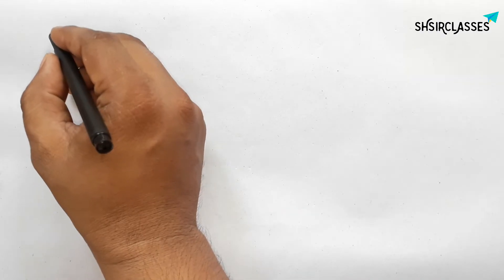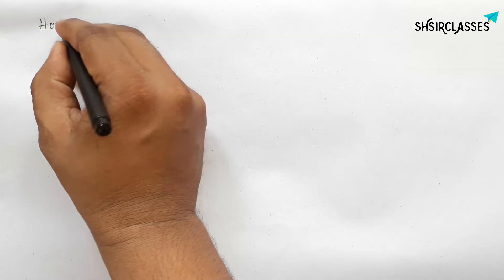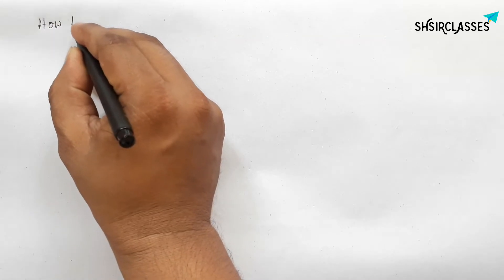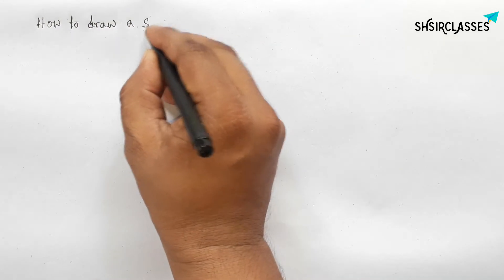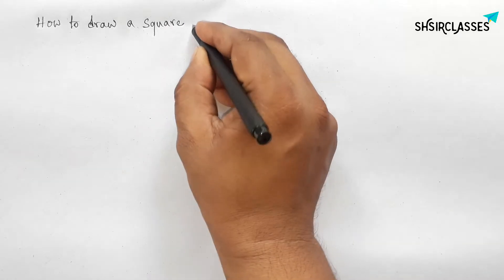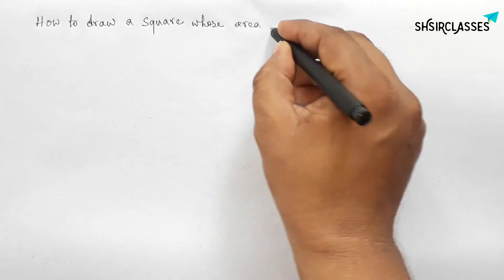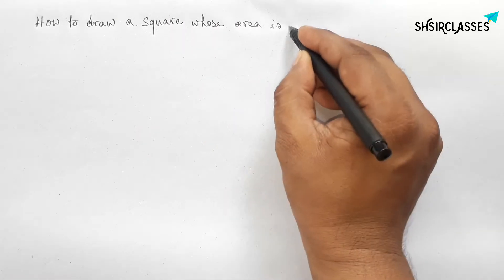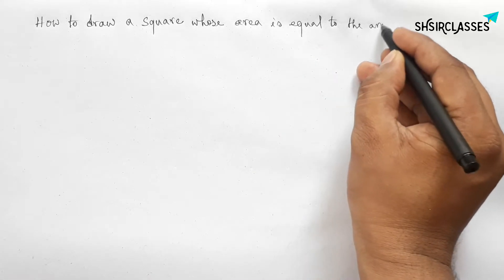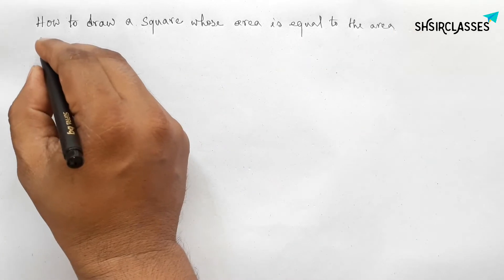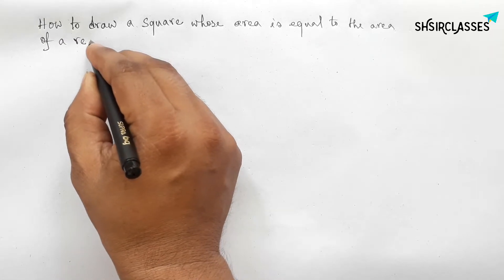Hi everyone, welcome to SSR Classes. Today in this video we'll learn how to draw a square whose area is equal to the area of a rectangle in an easy way. Please watch the video till the end. Let's start.